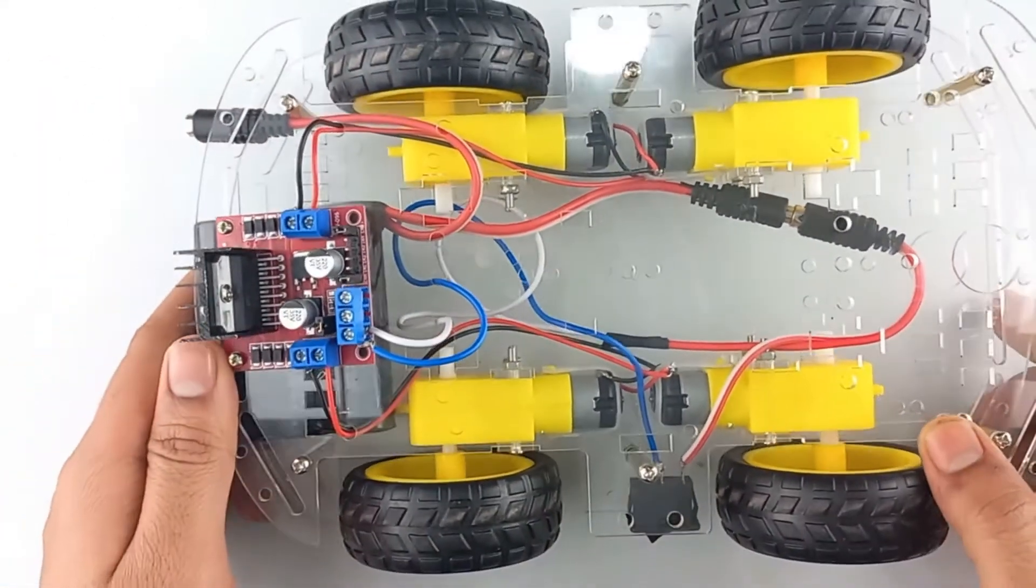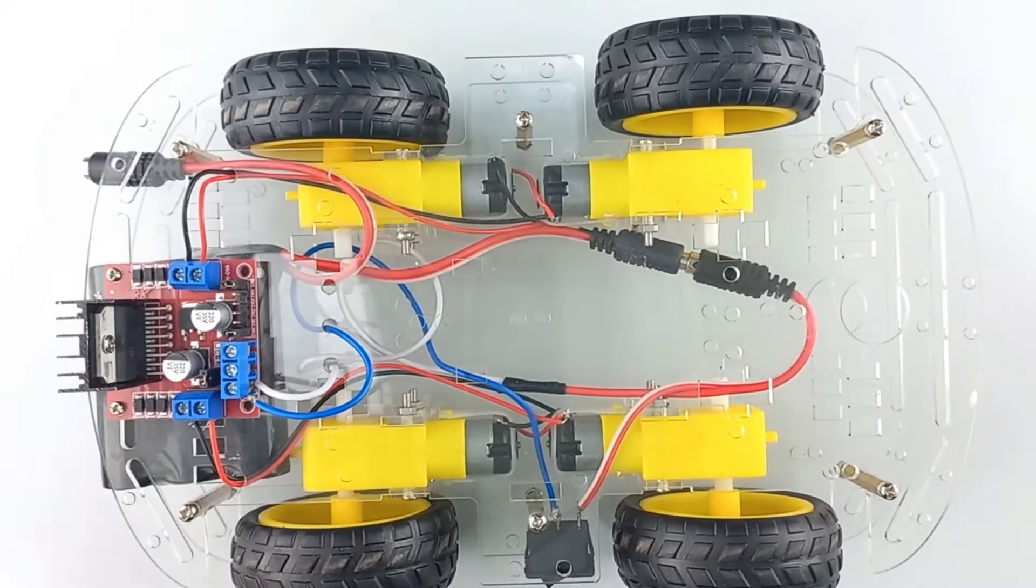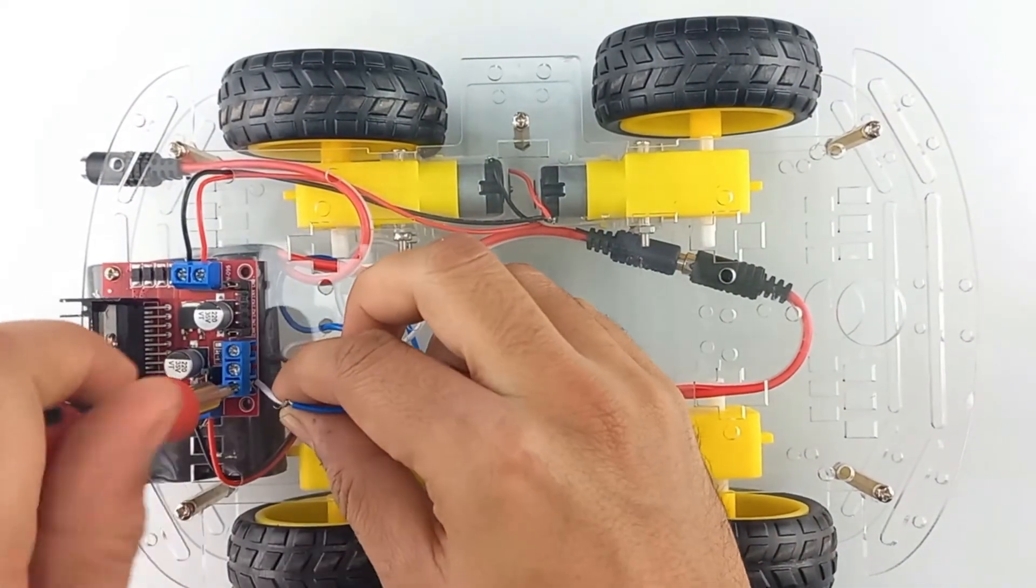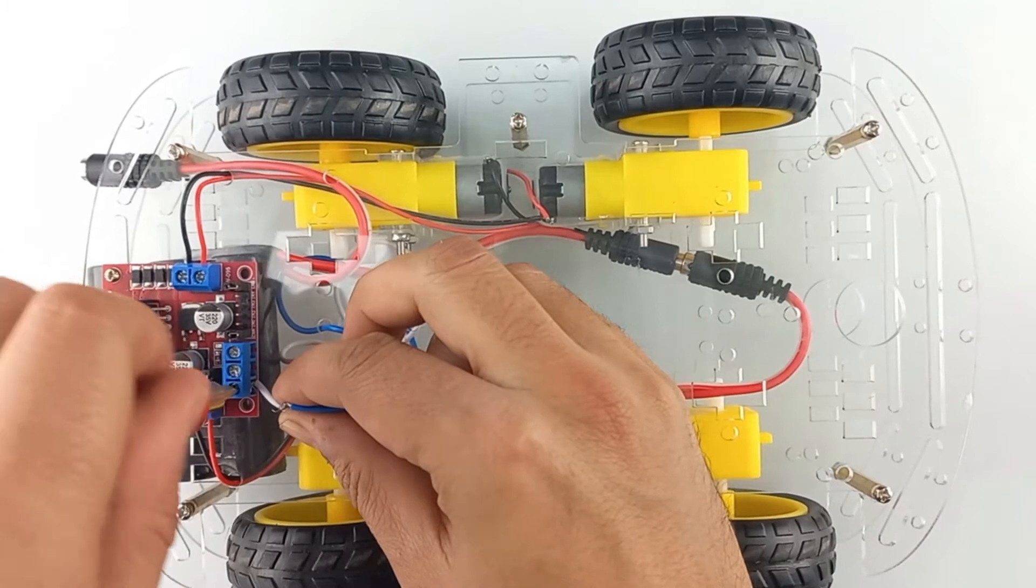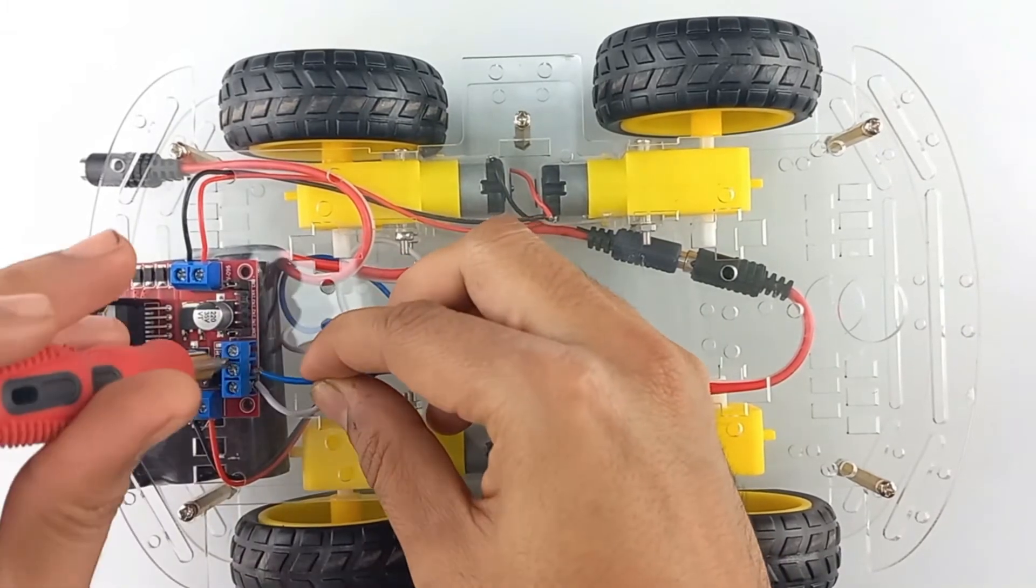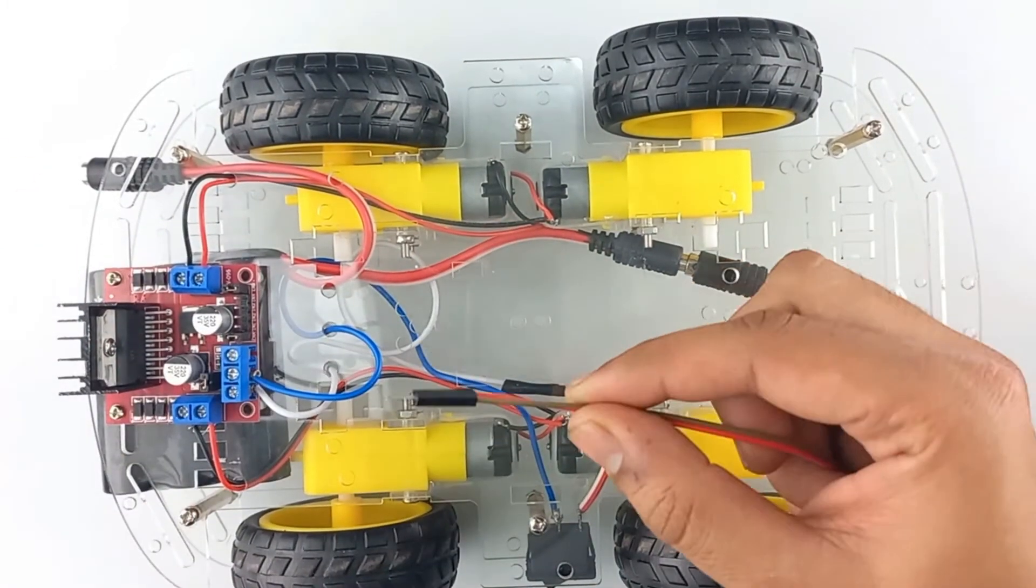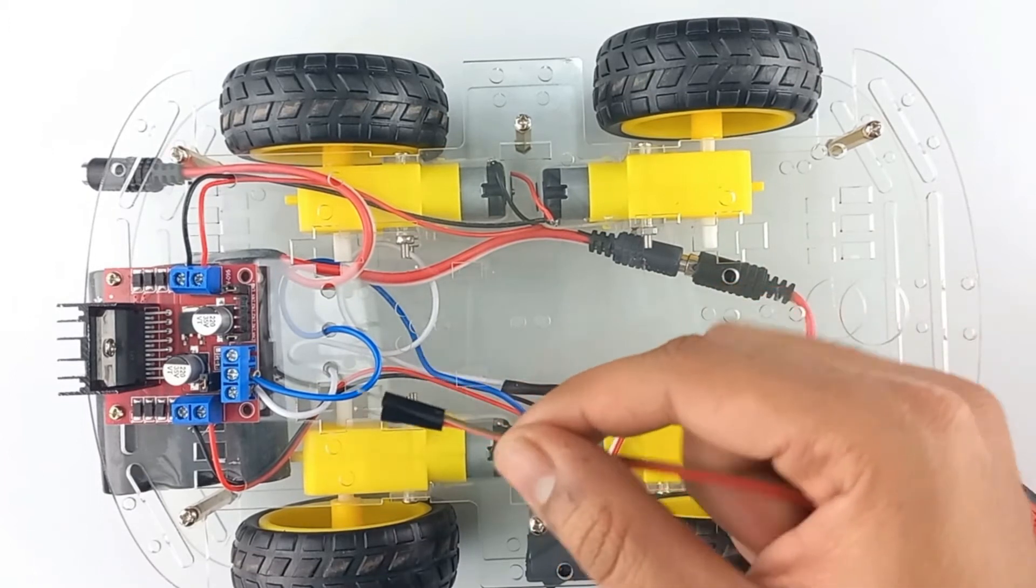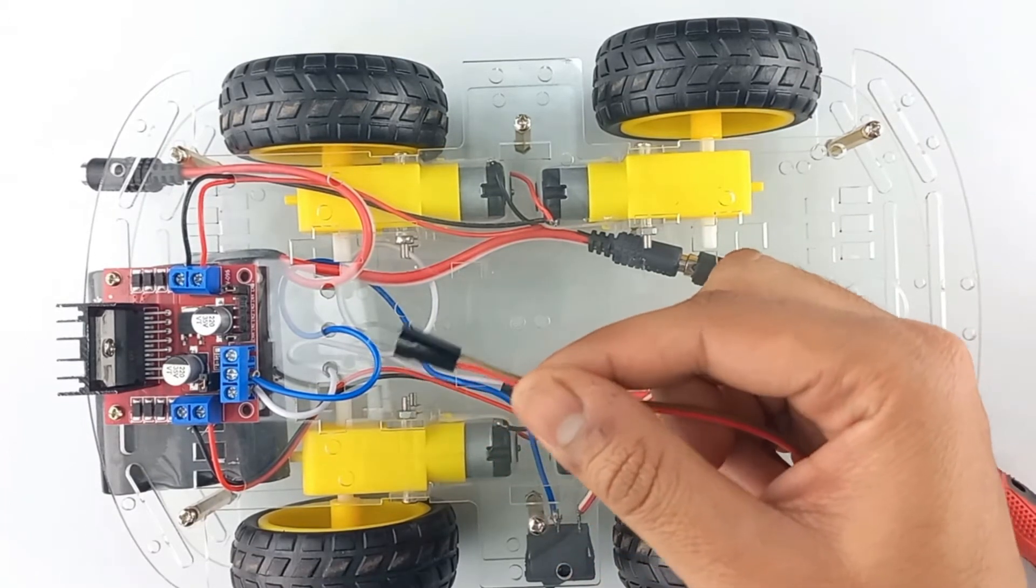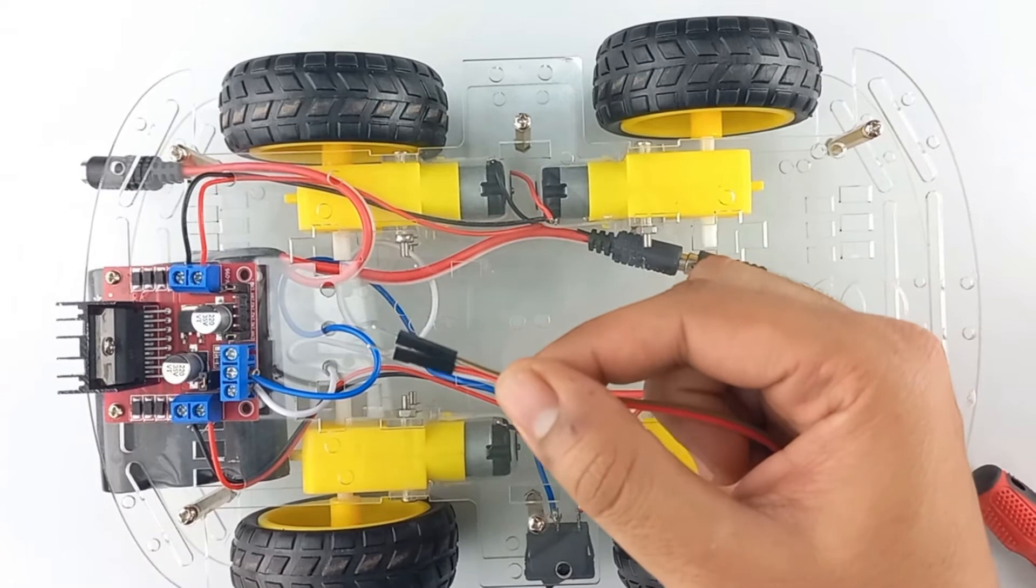Now let's connect the 12 volt battery. Positive terminal to the 12 volt terminal and ground to ground. Also take one jumper wire and connect to the 5 volts and ground that will connect to the Arduino.